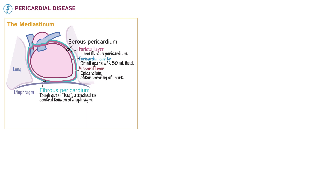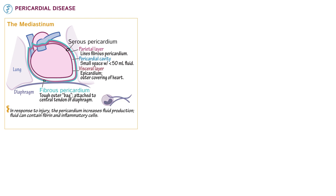The pericardium has a limited ability to respond to injury, which is often key to its pathology. In response to injury, the pericardium increases fluid production. This fluid can contain fibrin and inflammatory cells, and the pericardium can distend to hold this fluid, but only up to a point.